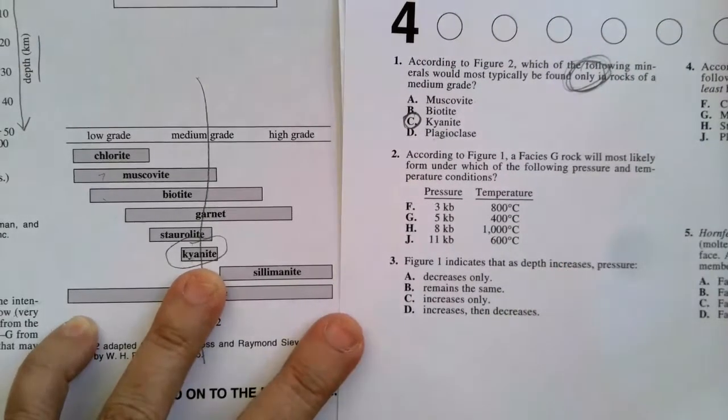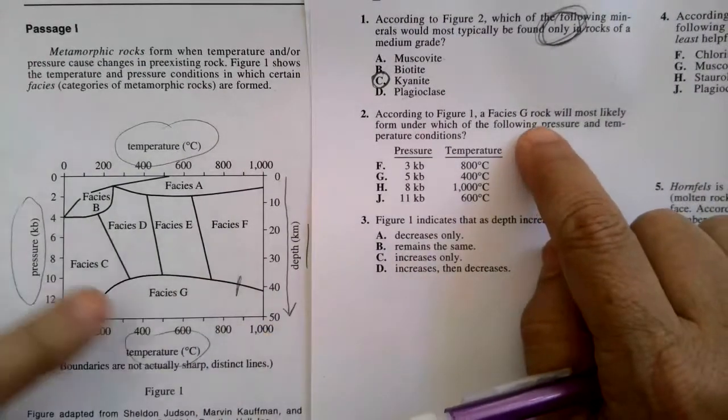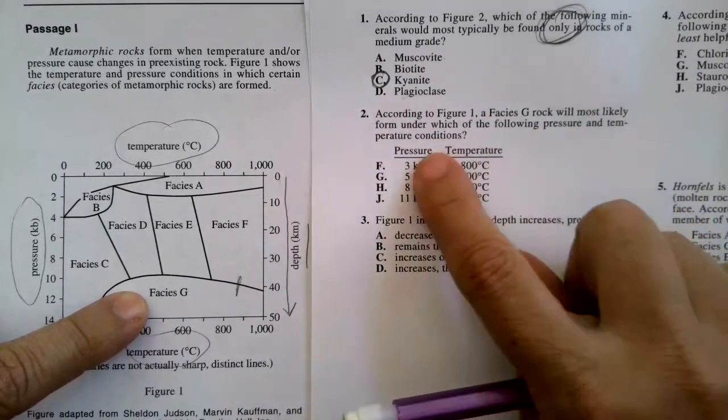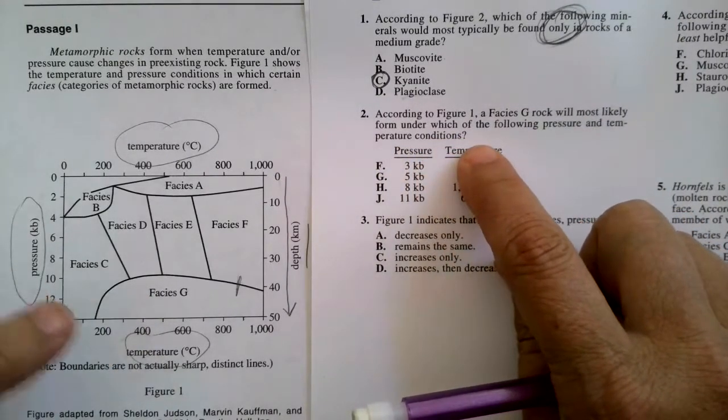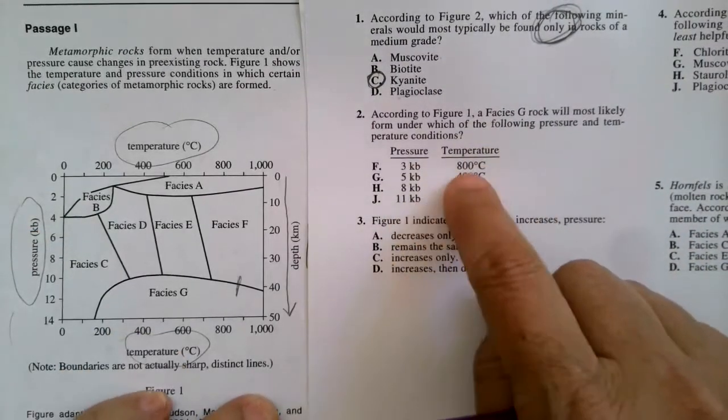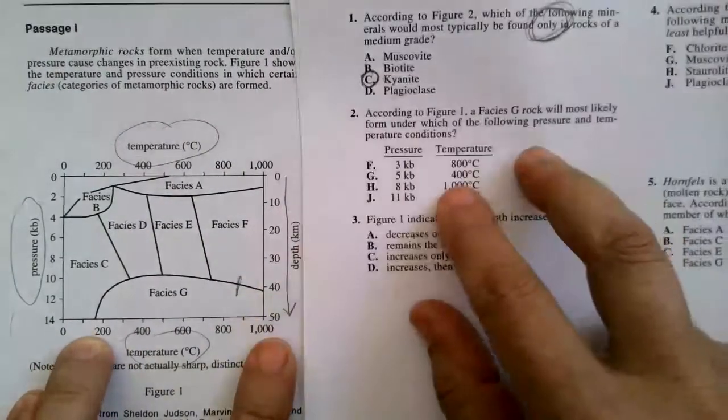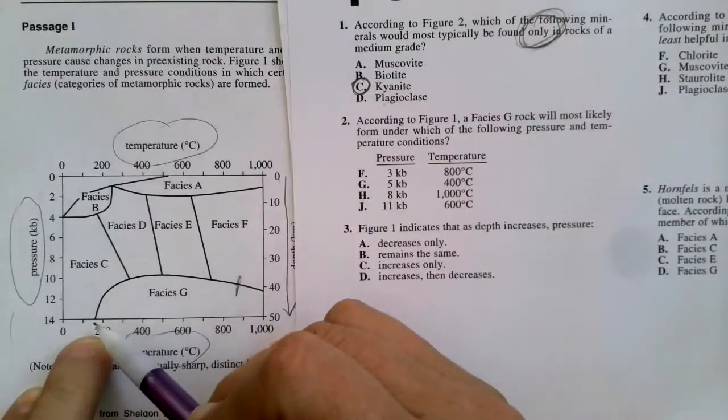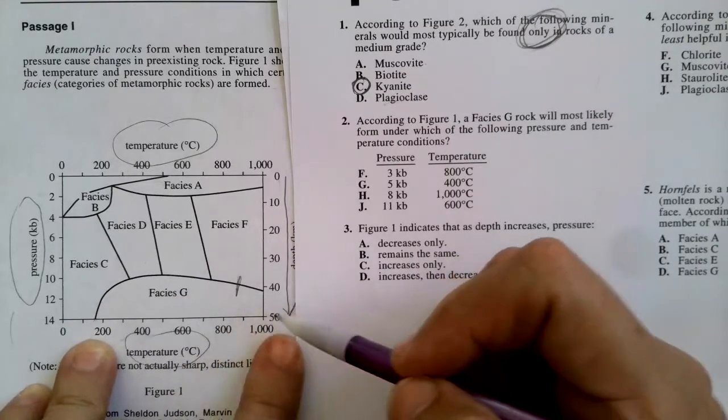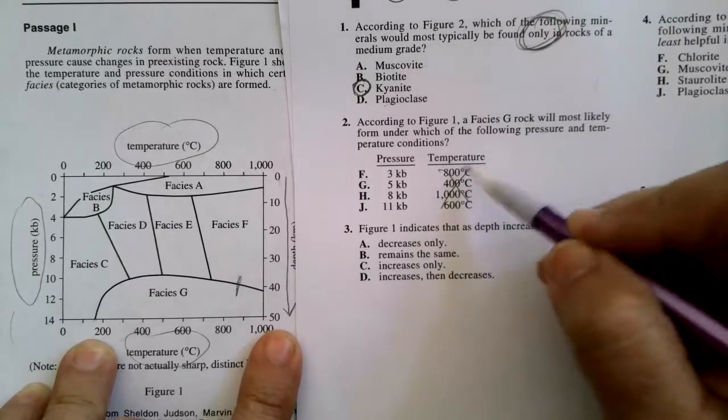Number two. According to figure one, let's get over here to figure one. A facies G rock, facies G is right here, will most likely form under which of the following pressure and temperature conditions? So pressure and temperature. The temperature variation is from about 150 degrees Celsius to over 1,000, so 800, those are all in that range. So that doesn't help me one single bit.